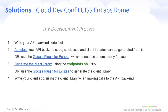The development process is quite simple. You write your API backend first — that's where you need to start — with the data design and the methods you want to expose. Then you can either annotate your API backend code, because the annotations help the toolkit generate the wrapper, or you can use the plugin for Eclipse if you are an Eclipse developer.